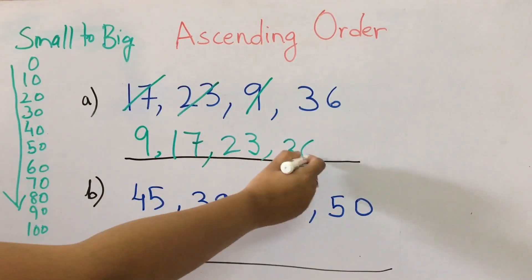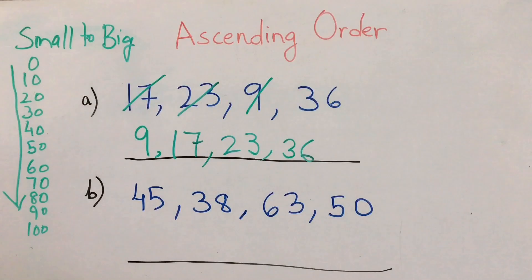Now I'll give one more question. We have 45, 38, 63, and 50. We'll start from the beginning. 0 to 10, we don't have anything. Then 10 to 20, also we don't have anything. Then 20 to 30, also we don't have.